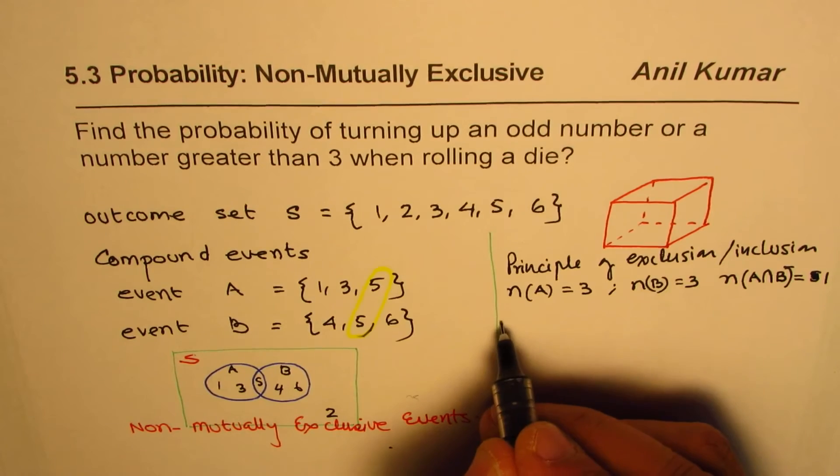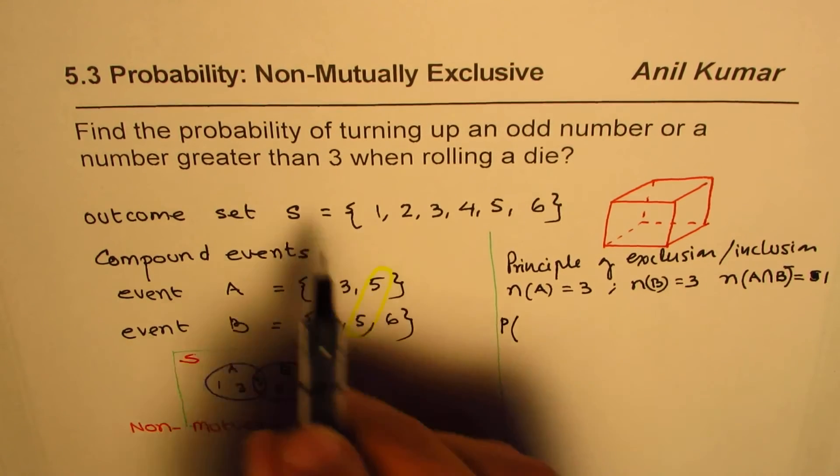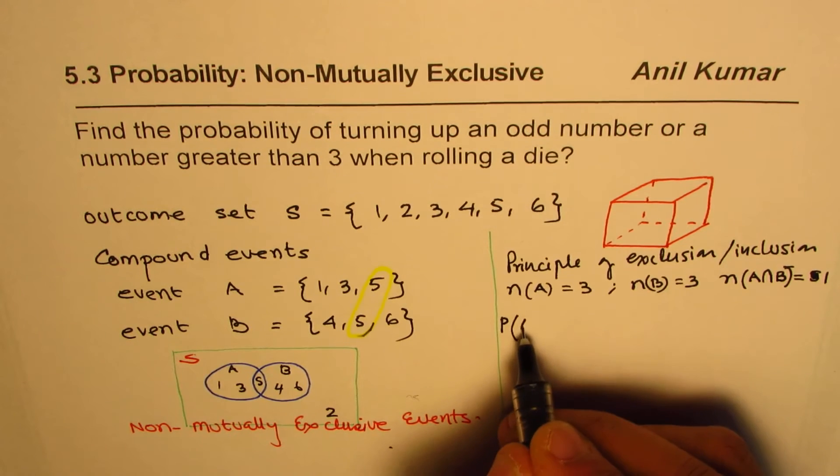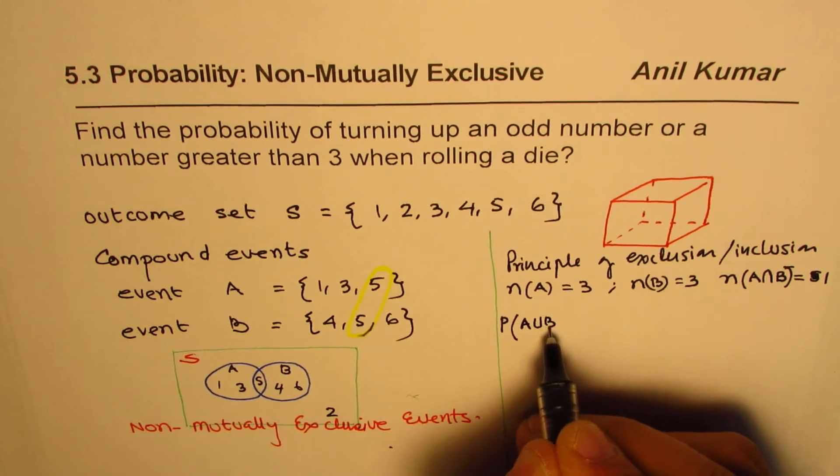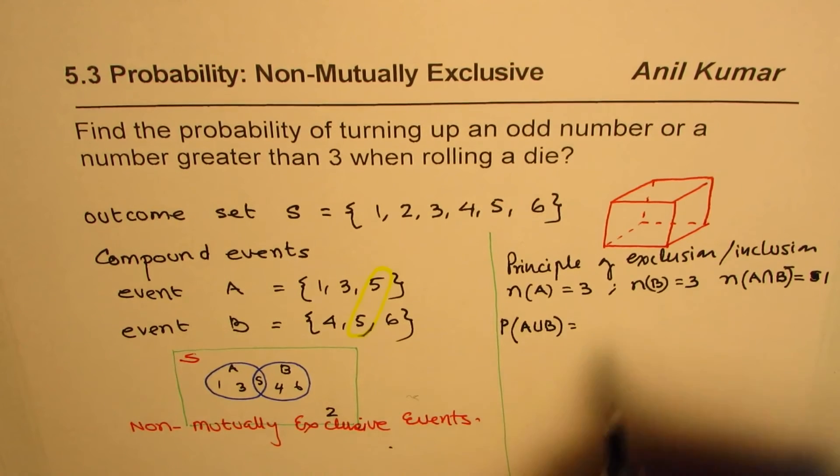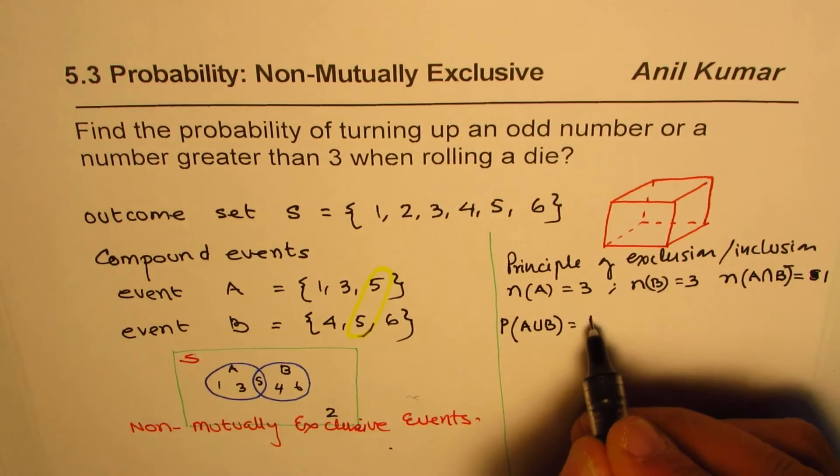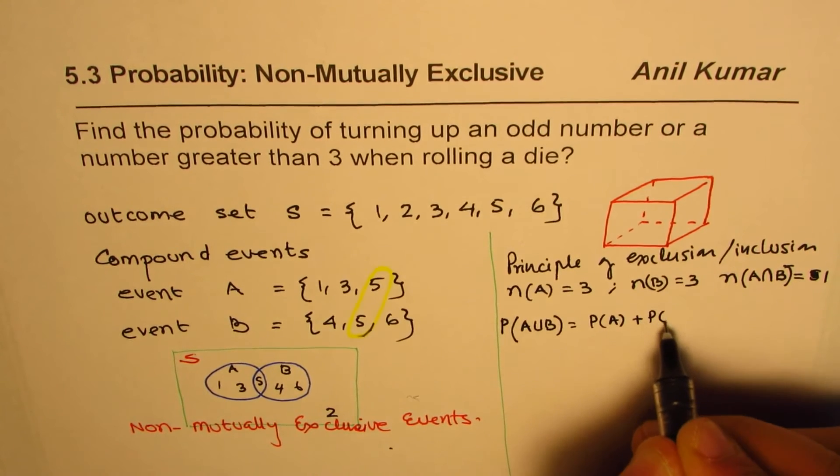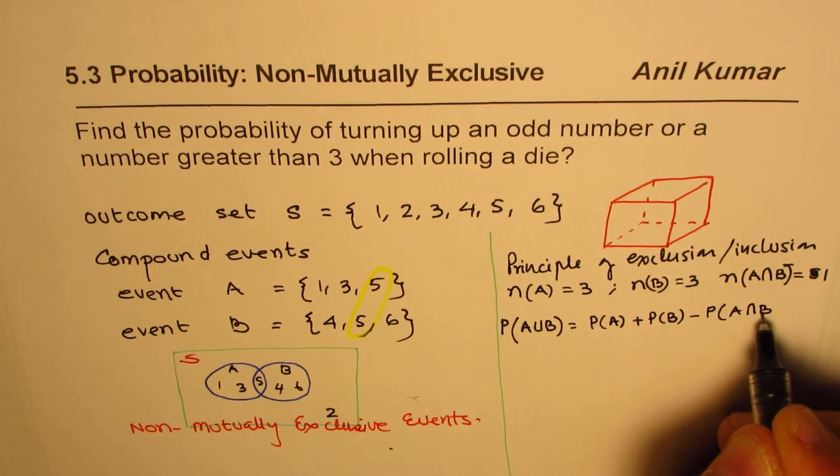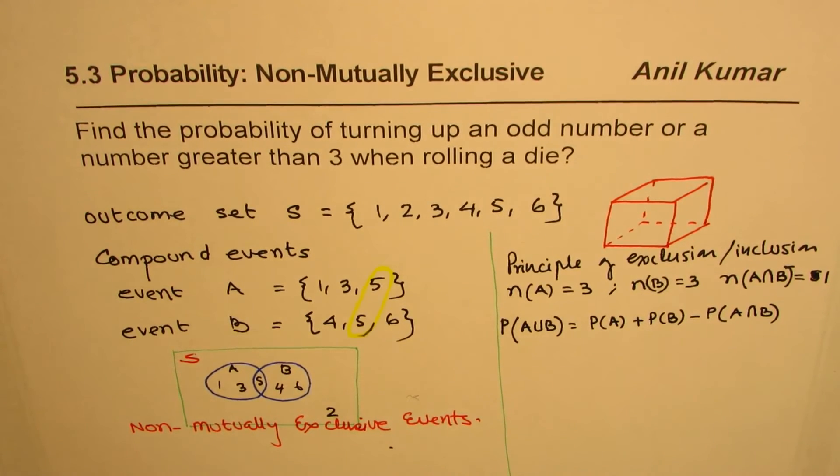So therefore, in such case, probability of both these events to happen, which is A union B, which are non-mutually exclusive, will be probability of A plus probability of B take away probability of A intersection B. Is that okay? Okay. So that is how it is? So that is how it is going to be.